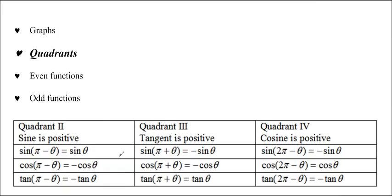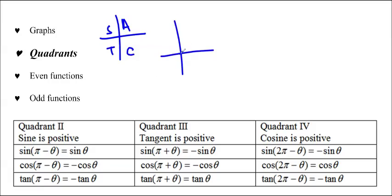We could also use the quadrants. Using CAST, in quadrant 2 sine is positive. So if we have a related acute angle theta, then sine of pi minus theta is equal to positive sine theta, because the whole angle is pi minus theta — this whole thing is pi, and then we subtract off theta — so sine equals sine.